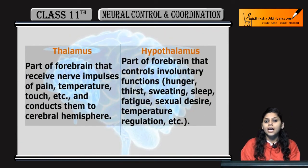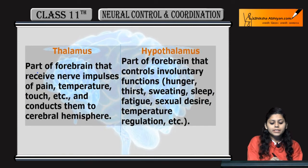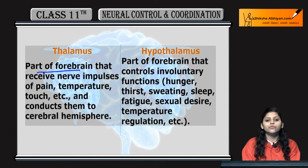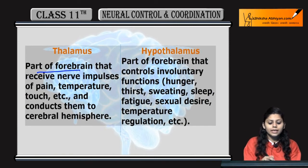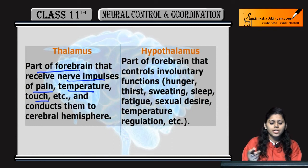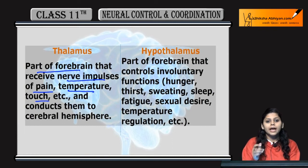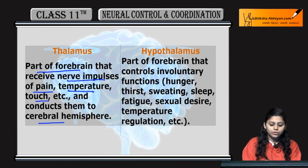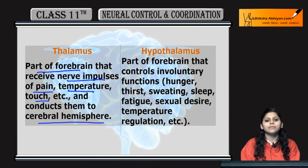Now coming to thalamus and hypothalamus. Thalamus is the part of forebrain. Jo receive karta hai nerve impulses of pain, temperature, touch, and unhey conduct karta hai to the cerebral hemisphere.